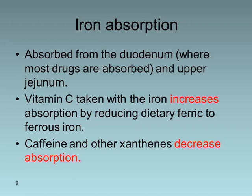The main site for iron absorption is the duodenum, as well as the upper jejunum — the same location where most drugs are absorbed. Vitamin C taken with iron increases its absorption by reducing dietary iron to ferrous iron, while caffeine and tannins decrease its absorption.